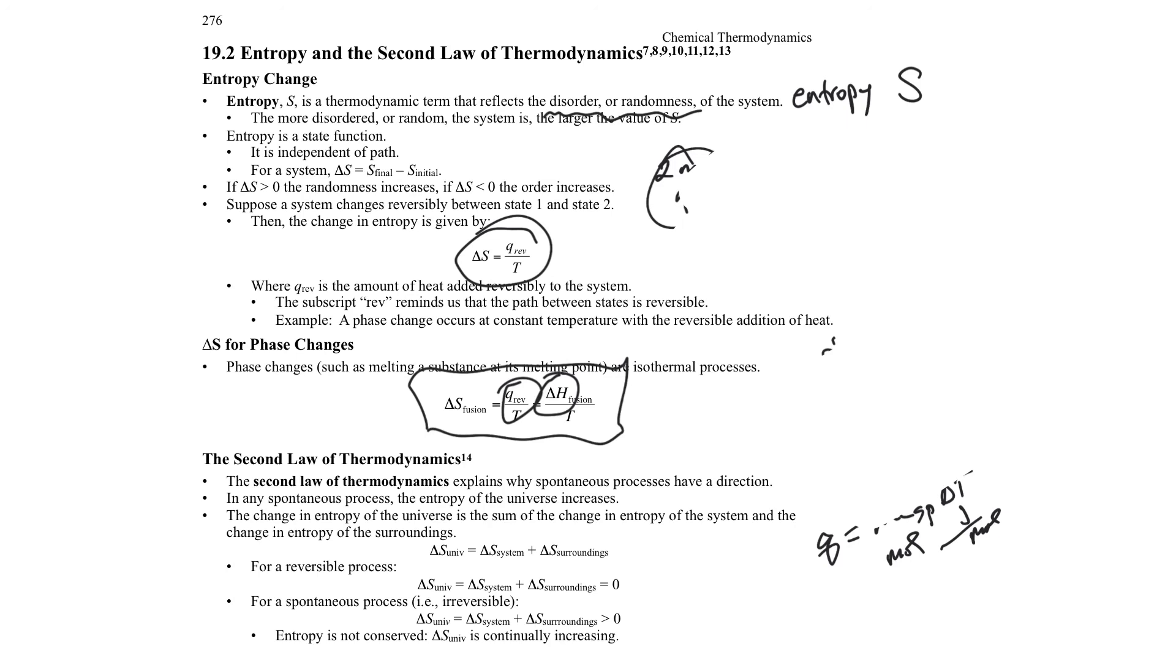So when God said, let there be, that was as orderly as it gets, and then it just kind of dissipates all throughout time and to where it will tend towards maximum disorder. That's why the sun would burn out one day or whatever. This is hard stuff. I hope it helps you.